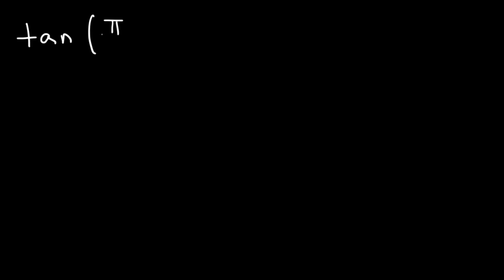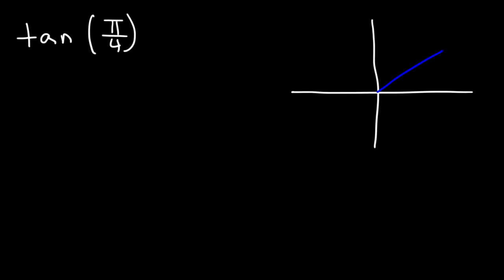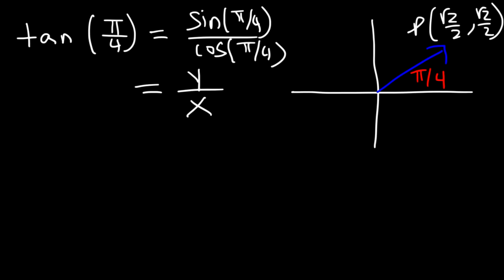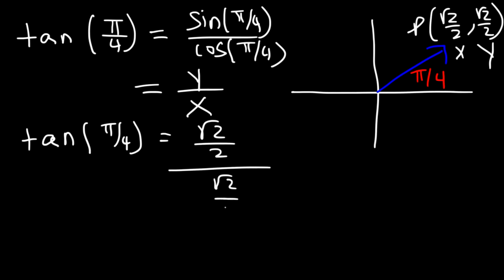Now let's say we want to find the value of tangent of pi divided by 4. We need to go back to the unit circle and find the values that correspond to pi over 4. At pi over 4, we have the point (√2/2, √2/2). Tangent is sine divided by cosine, where sine corresponds to the y value and cosine corresponds to the x value, so tangent is simply y over x. In this case y and x are both the same, so tangent of pi over 4 is √2/2 divided by itself — they cancel and give you 1.